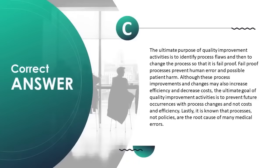The ultimate purpose of quality improvement activities is to identify process flaws and then change the process so that it is fail-proof. Fail-proof processes prevent human error and possible patient harm. Although process improvements may also increase efficiency and decrease costs, the ultimate goal is to prevent future occurrences with process changes. It is known that processes, not policies, are the root cause of many medical errors.